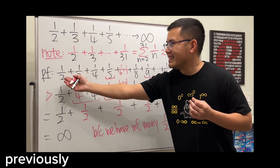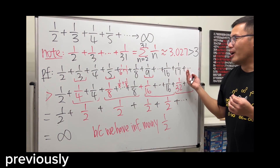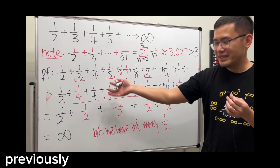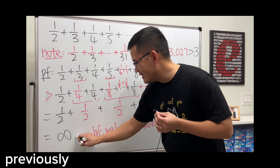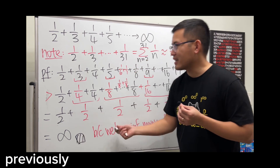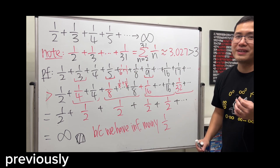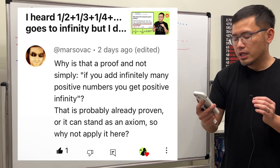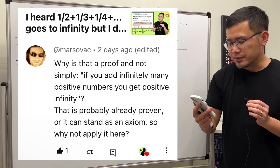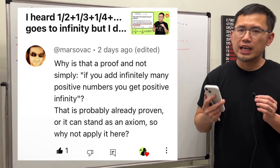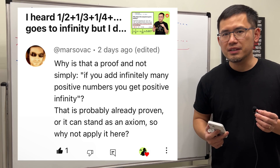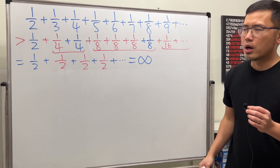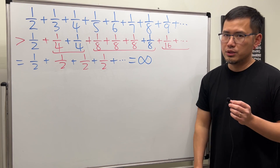As you can see, this harmonic series without a 1 goes to infinity, and this right here is the classic proof of it. Why is that a proof, and not simply, if you add infinitely many positive numbers, you get positive infinity? Well, this right here is the bizarre part when we are dealing with infinite series.